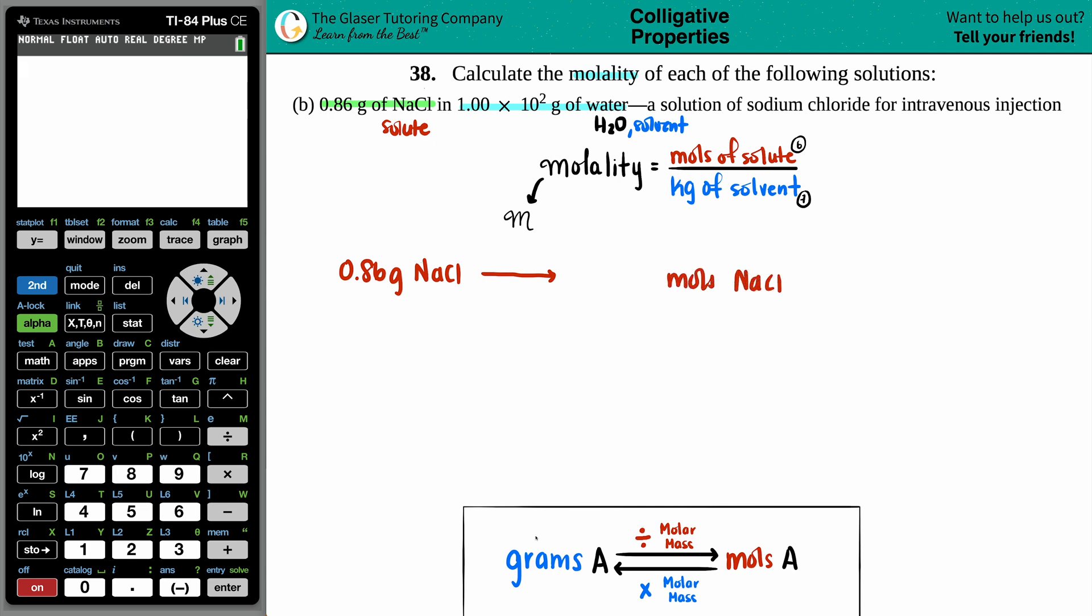Well, how am I going to do that? Back to basics. Grams of any substance, if you want to go to moles of that same substance, all you got to do is divide by the molar mass. Go on that periodic table, find out what the molar mass is of NaCl.